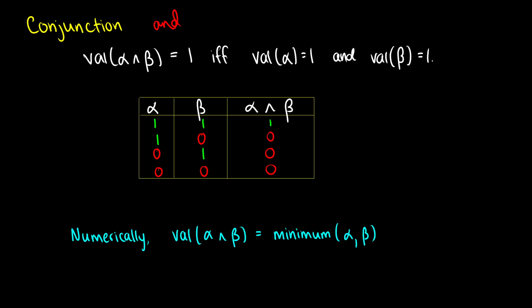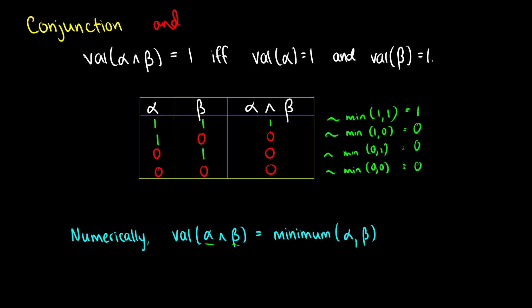Numerically, the value of alpha-and-beta is the minimum of alpha and beta. In the first row, the minimum of 1 and 1 is just 1. In the second row, the minimum of 1 and 0 is 0. In the third row, the minimum of 0 and 1 is 0. And in the final row, the minimum of 0 and 0 is also 0. So we can get a truth table using that mathematical formula. And when you have logic that is multivalued — meaning you have logic between 0 and 1, like 0.5, 0.25, 0.17 — these formulas still work, which is why I like to introduce them early.